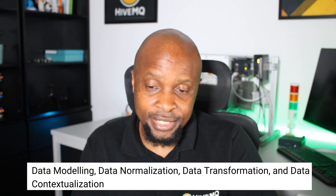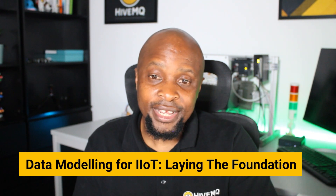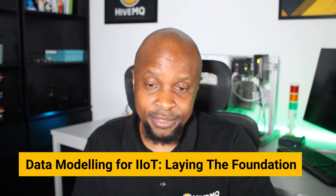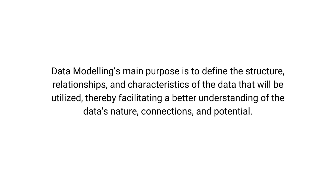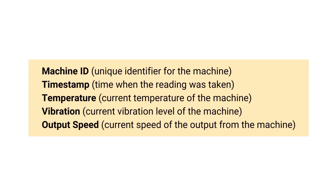Data modeling is a crucial starting point in any data integration for smart manufacturing initiative. Its main purpose is to define the structure, relationships, and characteristics of the data that will be utilized, facilitating a better understanding of the data's nature, connections, and potential. This involves identifying and categorizing diverse data attributes, including real-time operational data and those that provide context to such data. For example, a machine on the assembly line may have multiple sensors that track temperature, vibration, and output speed, and a simple data model for this machine might include the following.